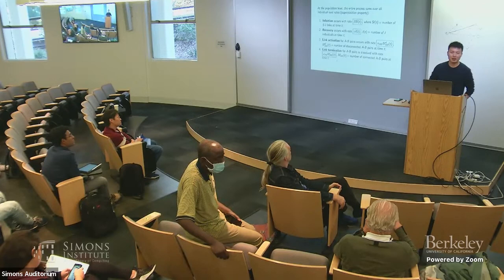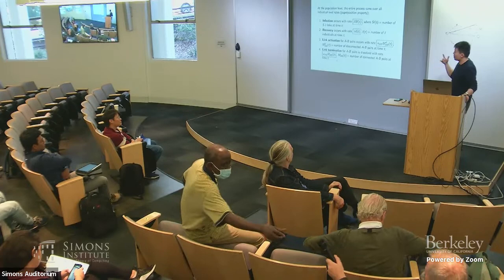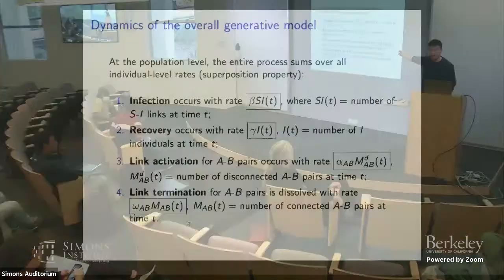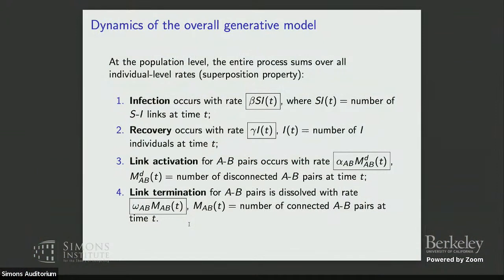Audience question: What do you want to learn? The answer: beta and gamma, modulated by the changing network, plus the network rates — such as the probability of disconnecting when healthy versus infected. Because the network is completely observed in our case, it's somewhat contrived to learn the network rates in the full joint method, since you could estimate them separately. But epidemiologists may find this makes the model more realistic for estimating beta and gamma effectively.